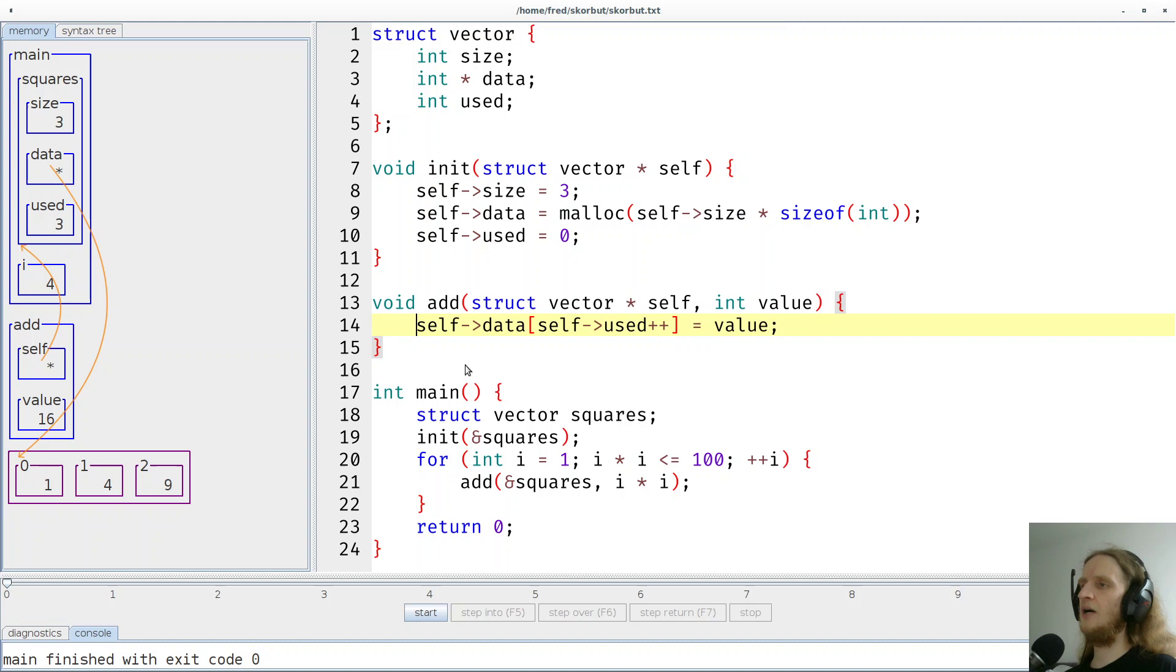So how could we detect this error? So how could we detect that this line will basically cause this error? That's quite simple. We simply have to check these two values. If size and used are the same, then that means that the array is completely populated and we should probably make it bigger.